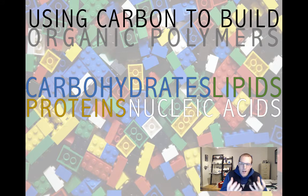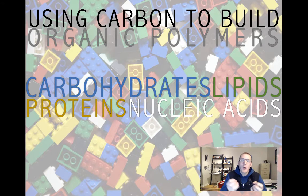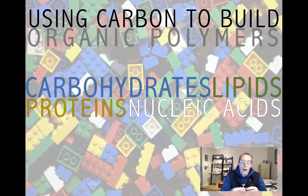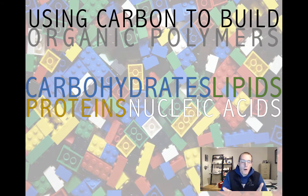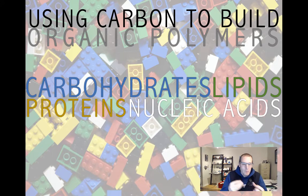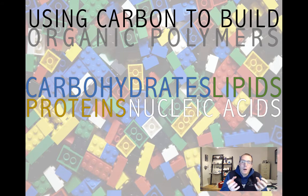Complex carbohydrates like starch and cellulose are built up by joining basic monomers. In the case of starch and glycogen, that monomer is glucose. Proteins are built into functional products using a monomer called an amino acid. So all of these macromolecules — the carbohydrates, lipids, proteins, nucleic acids, the molecules of life — have these basic building blocks. They're like Legos, basically. You can join them together.